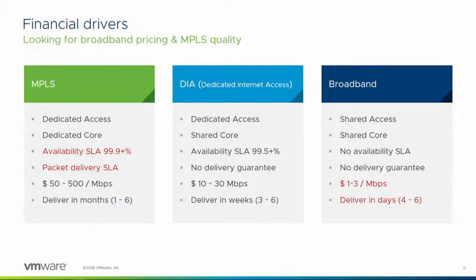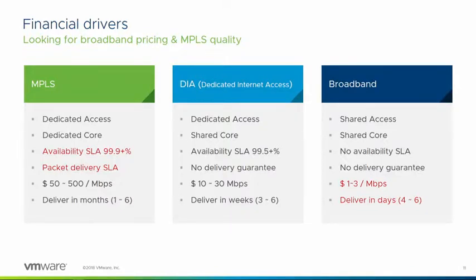At the other end of the spectrum, broadband circuits are shared environments with shared access and a shared core — no real SLA, just best-effort delivery. The obvious advantage is cost: approximately $1 to $3 per megabit. Delivery is also fast — a matter of a week. Wireless broadband like LTE or 5G can be delivered the same day and is very portable. Somewhere in the middle, dedicated internet access links are business-grade fiber circuits at around $10 to $30 per megabit, delivered in a couple of weeks, with an availability guarantee but no packet delivery guarantee.